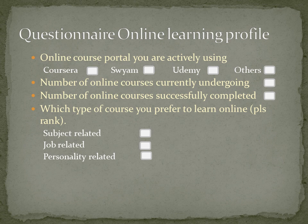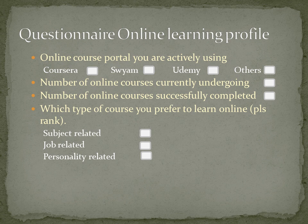The number of online courses currently enrolled in is a continuous ratio scale question where respondents can give the actual number, just like the number of online courses successfully completed. Then, which type of course do you prefer to learn online? This is a ranking question where respondents can put their preferential ranking 1, 2, 3, etc., to the given preferences.